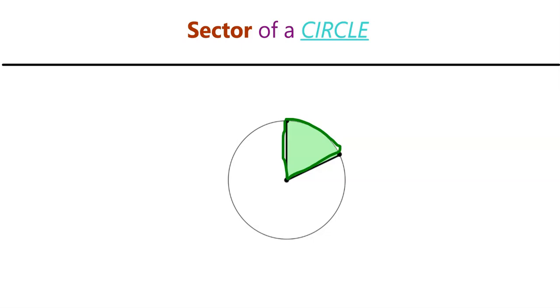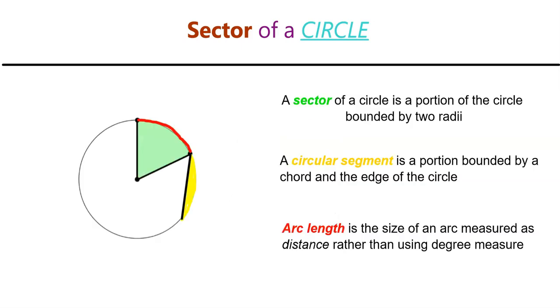We could also add the chord between the two ends of the radii, and then we get something called a segment of a circle, or a circular segment. A sector of a circle is a portion of the circle bounded by two radii, that's in green. A circular segment is a portion bounded by a chord and the edge of the circle, that's in yellow. And if we take the actual length of the edge of the circle and straighten it out to a segment and measure its length, not in degrees but as distance, that is something we call arc length.